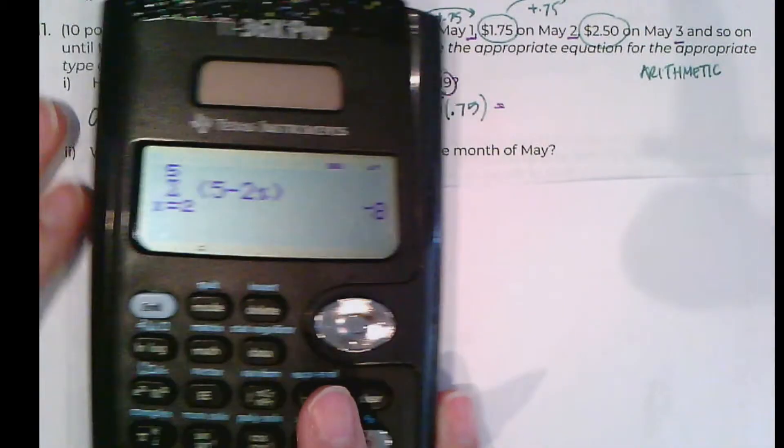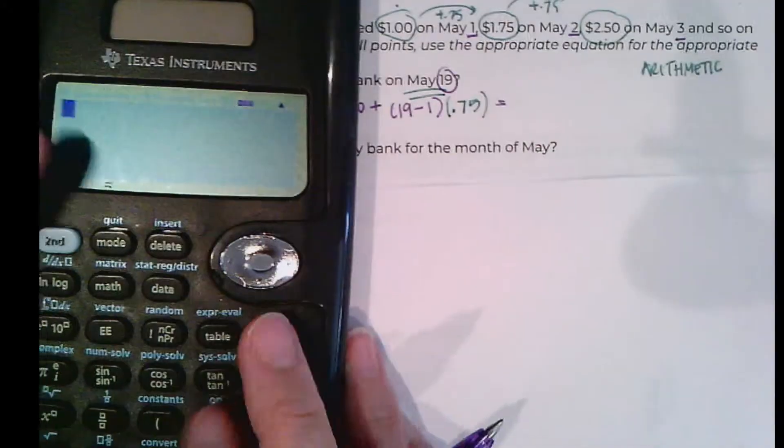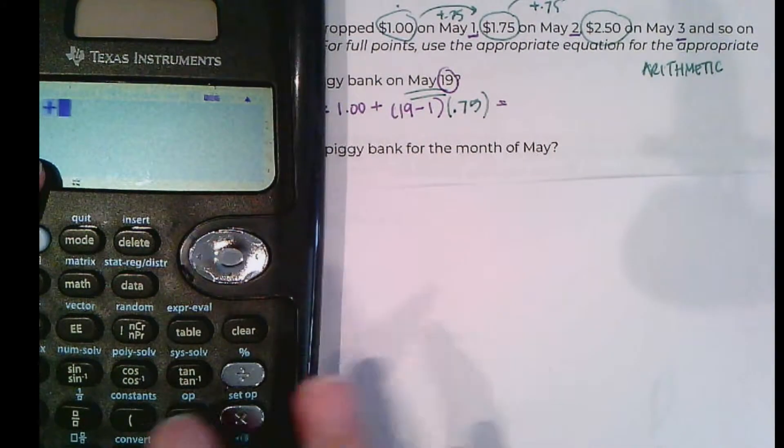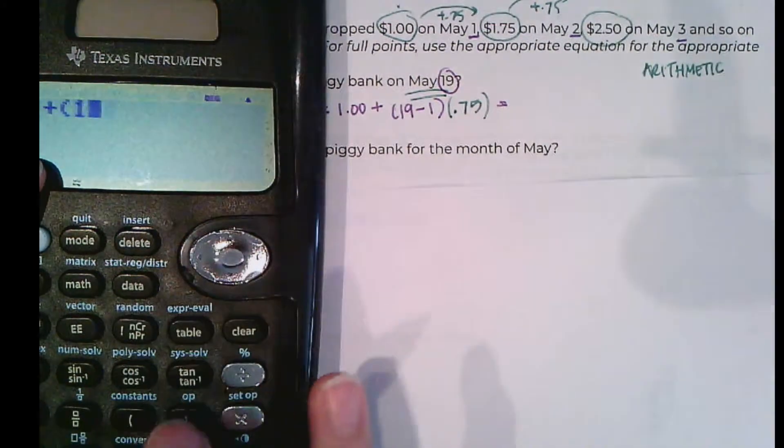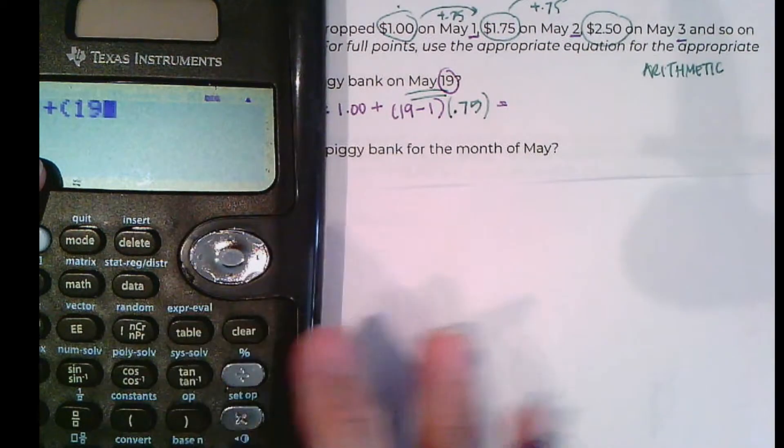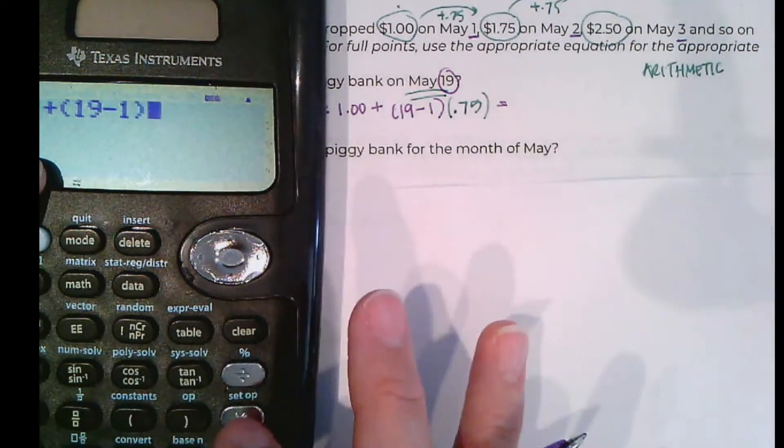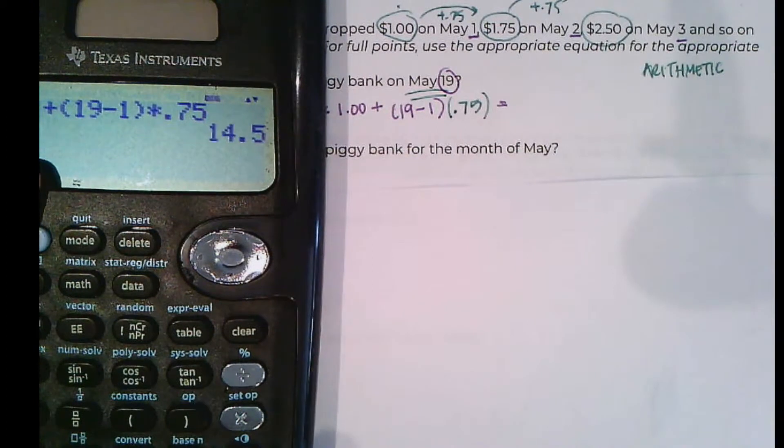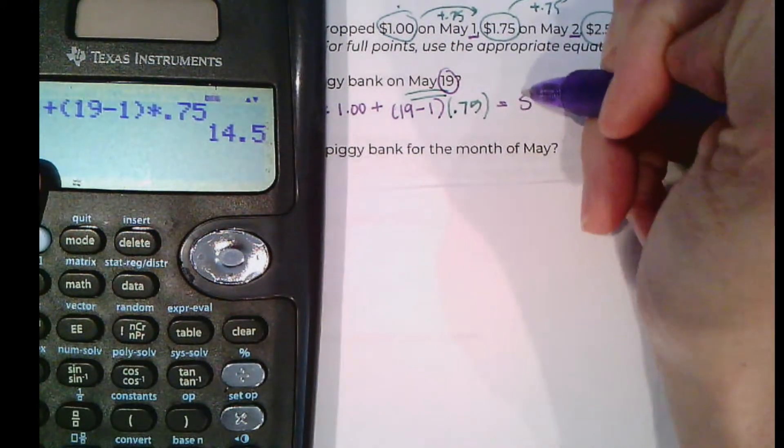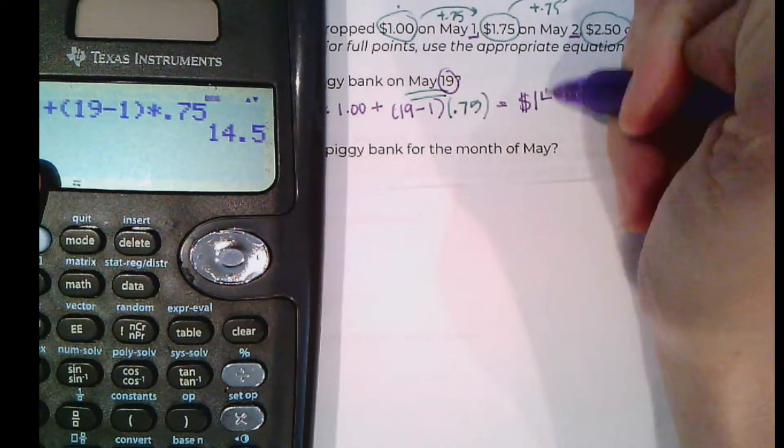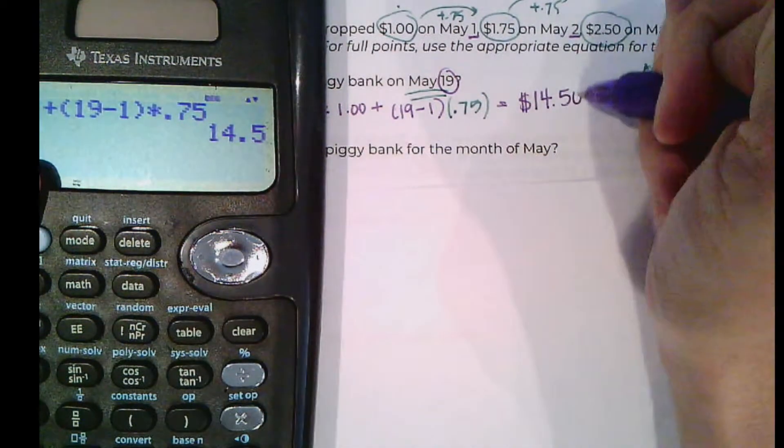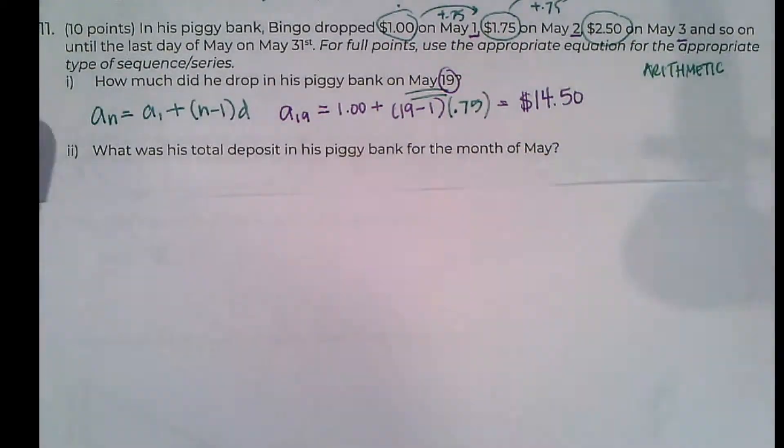So pull out my calculator. I want 1 plus 19. I could just make this 18, I'm just being slow about it. Times 0.75. It looks like by May 19th, he's dropping $14.50 in there. Quite a bit of money.